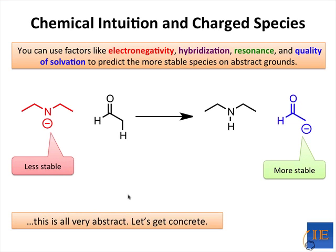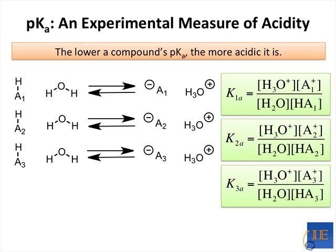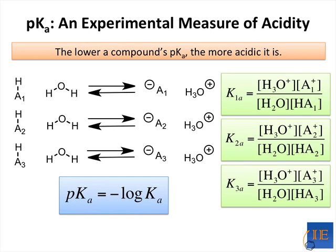These abstract arguments are nice, but organic chemists have verified these ideas with experiments. Imagine we took a series of compounds and treated them with a common base — let's say water. We could then measure the extent of proton transfer of each compound to the water using the equilibrium constant K as a measure of relative acidity. More acidic compounds will give up protons more easily, leading to larger K's. Because equilibrium constants can be dramatically huge, let's take the logarithm of K to make the numbers more manageable. The log is multiplied by negative one to make the vast majority of pKa's positive. Ka's less than one are common because most protons don't just fall off spontaneously. This experimental measure of acidity, pKa, can be used to directly compare the stability of charged species.